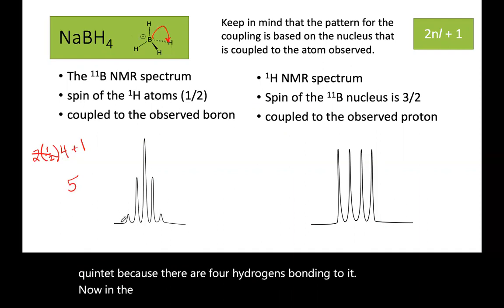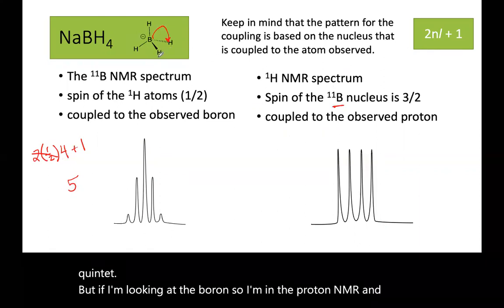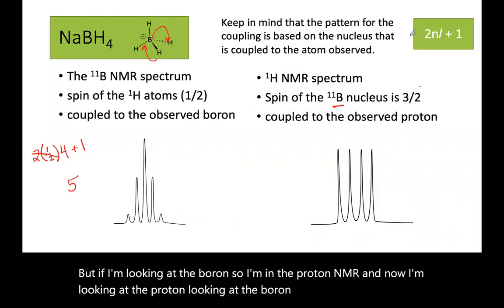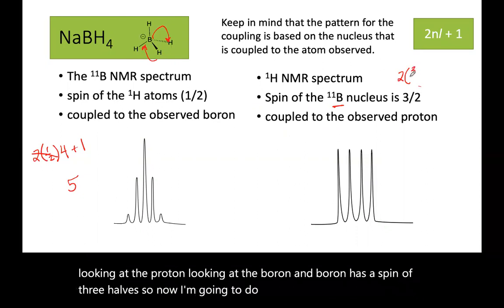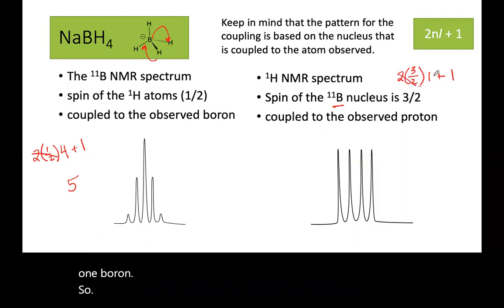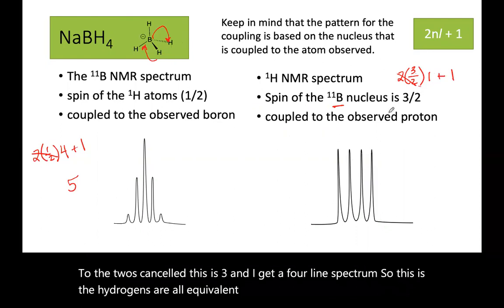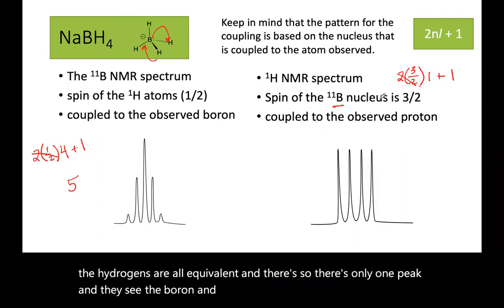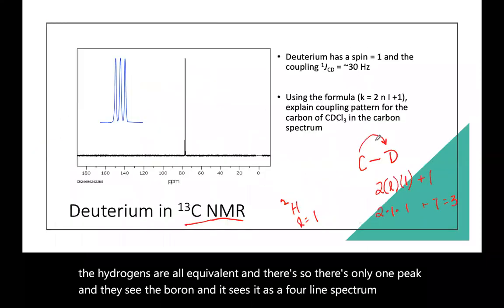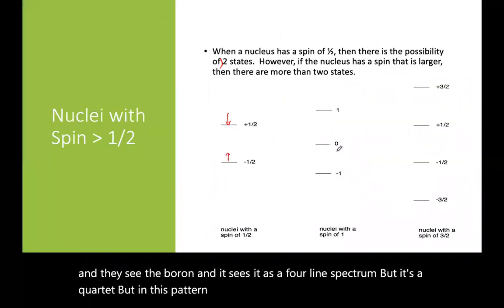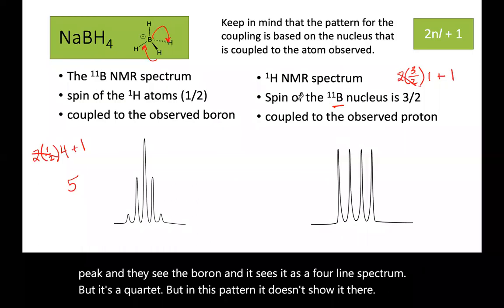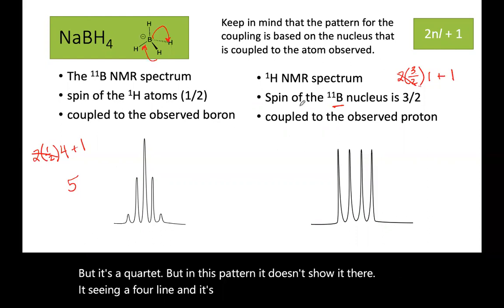Now in the proton NMR, and it's the usual pattern that we see for a quintet. But if I'm looking at the proton looking at the boron, and boron has a spin of three halves. So now I'm going to do two times three halves. And there's only one boron. So the twos cancel, this is three, and I get a four line spectrum. So the hydrogens are all equivalent and they see the boron, and it sees it as a four line spectrum. But it's a quartet, and it's just the one coupling. So everybody's at the same height.